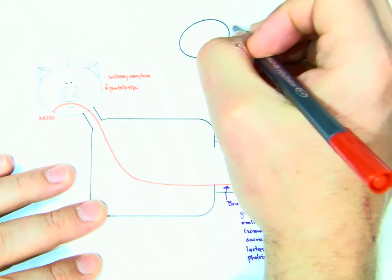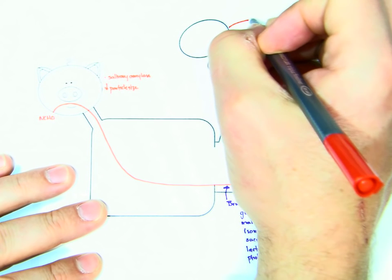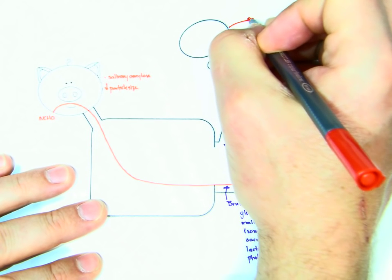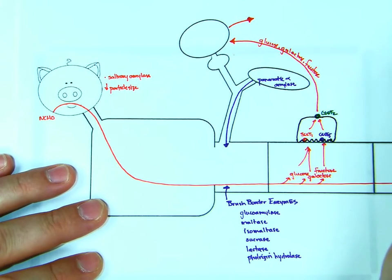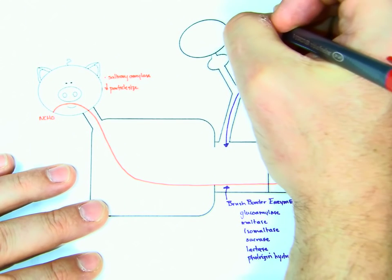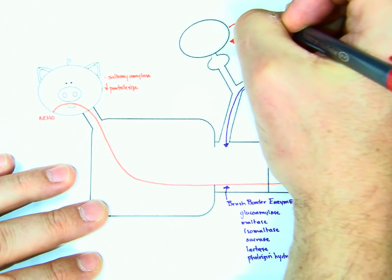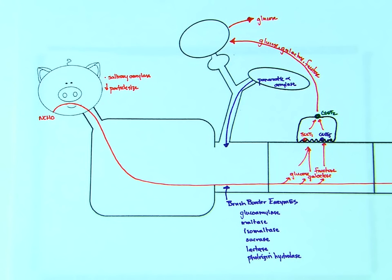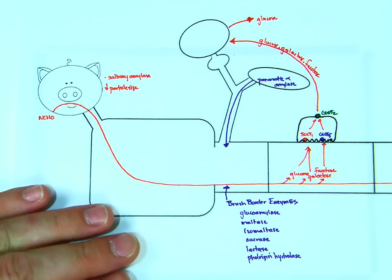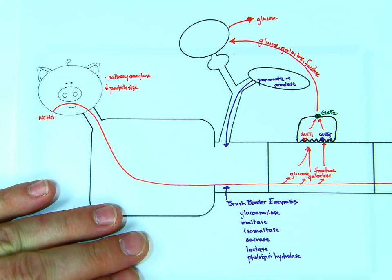And then the body is going to, or the liver is going to metabolize galactose and fructose to glucose, and the liver is going to release the glucose. The liver can store some of the glucose as glycogen, but it's going to release most of it. Okay, and we're just going to leave the glucose there for a second, and we'll talk about what's going to happen in the large intestine.